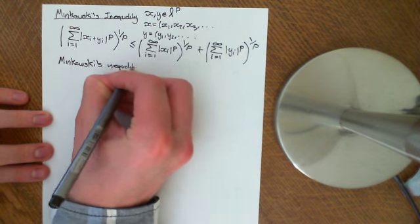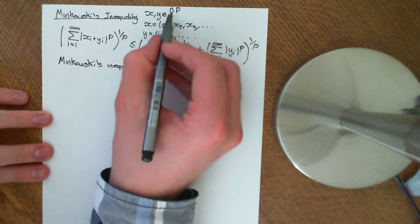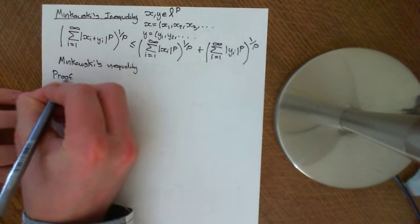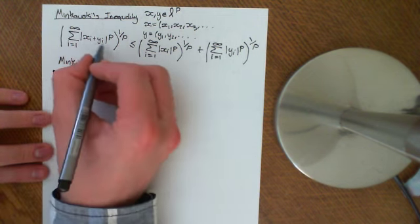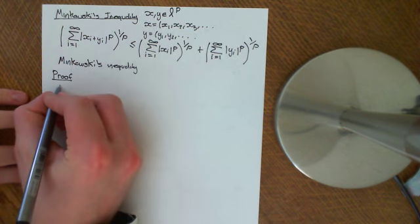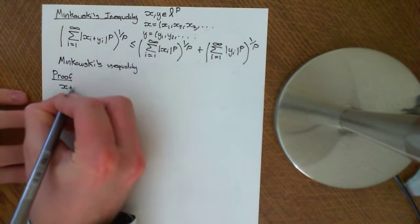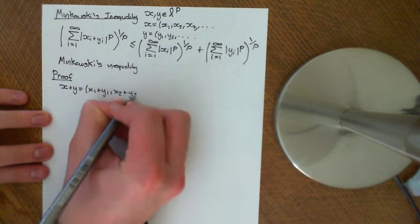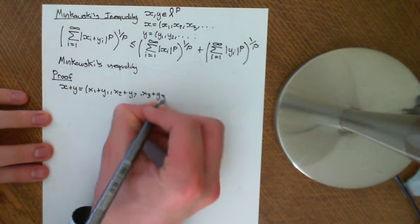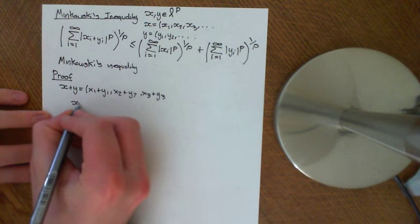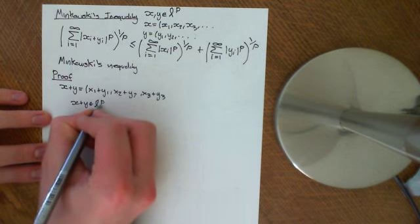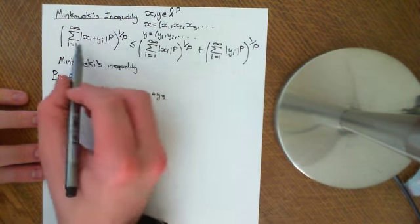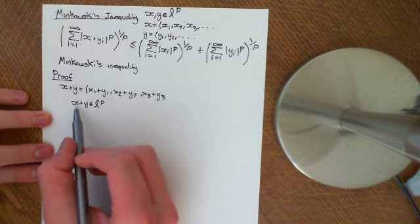This works for any two sequences which are elements of this LP space. Now, the first thing to note in the proof is that I cannot yet prove that the new sequence x+y, defined as (x1+y1, x2+y2, x3+y3, ...), is an element of LP. But note: if I prove this inequality, then I do indeed prove that this vector is an element of LP.